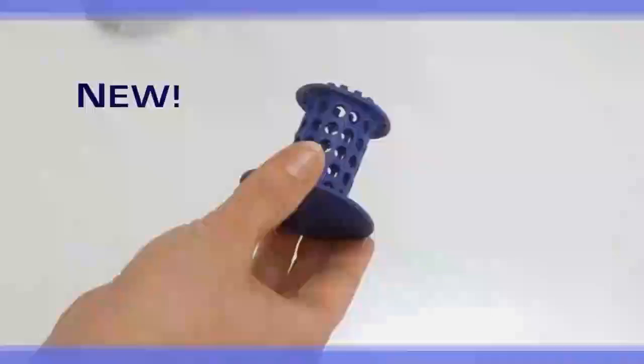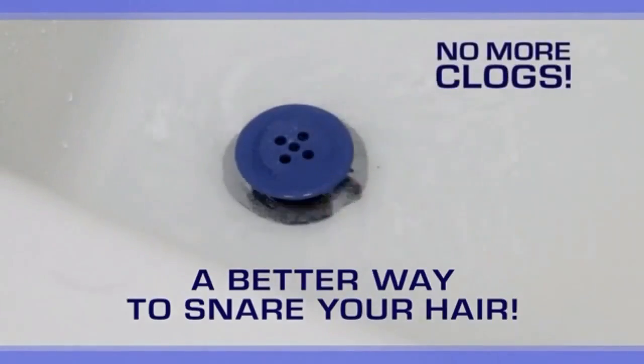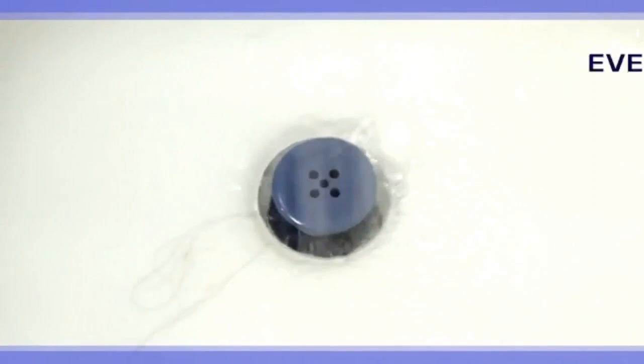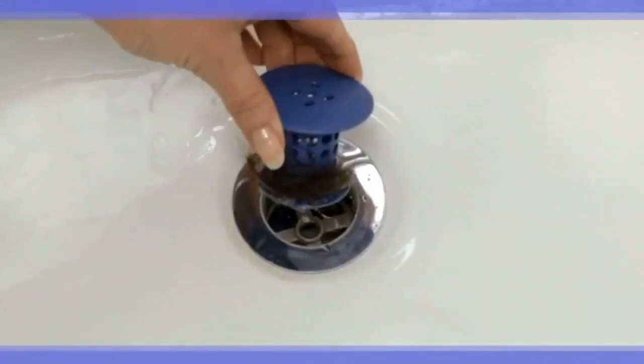TubShroom is the all-new and better way to snare your hair and prevent clogged tub drains. Watch, TubShroom catches every single hair every single time you shower, and getting rid of trapped hair is simple too. Just lift it out and wipe it off. It's that easy.